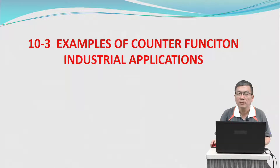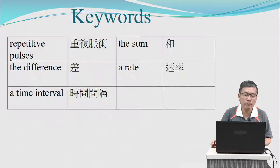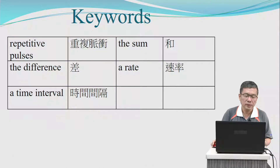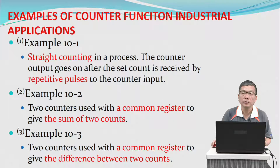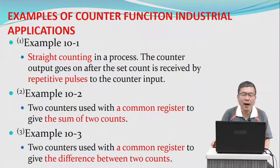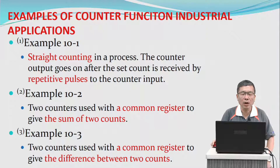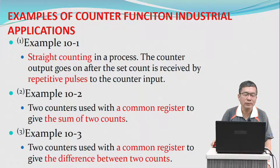Examples of counter functions for industrial applications. The keywords are: repetitive pause, sum, difference, rate, and time interval. Example 1 covers straight counting in a process, where the counter output goes on after the set count is received by repetitive pause to the counter input.